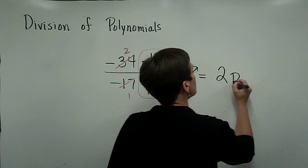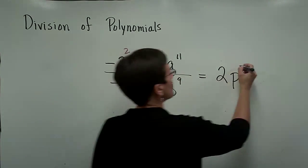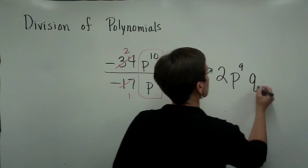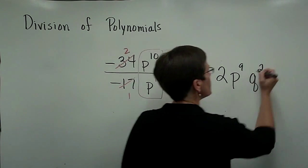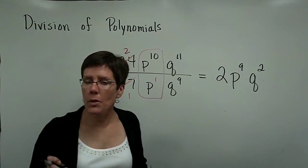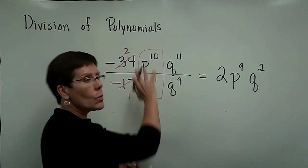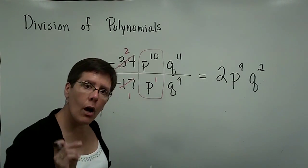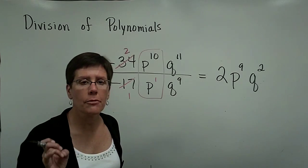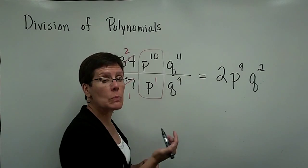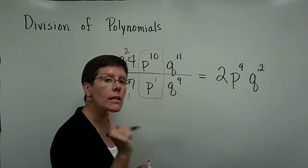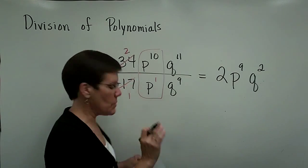So we have a positive 2. p to the 10 minus 1 is 9. And then q, 11 minus 9 is 2. We won't focus on negative exponents when dividing. Would you always say to yourself, the property for division requires that I take the exponent in the numerator and subtract the exponent in the denominator when the bases are alike. Please go in that order from top to bottom.